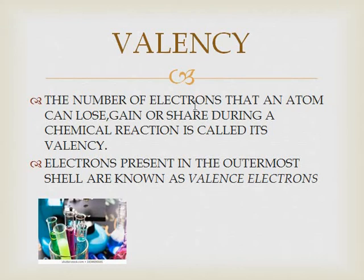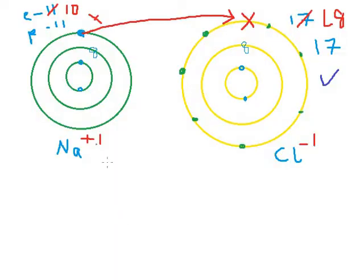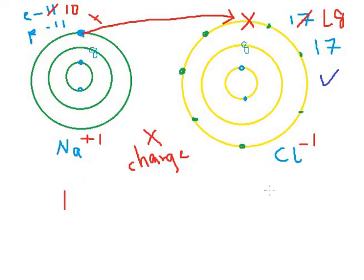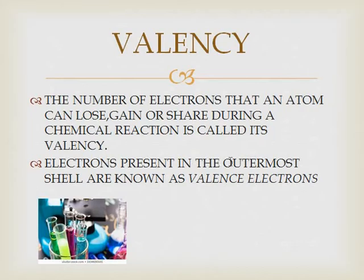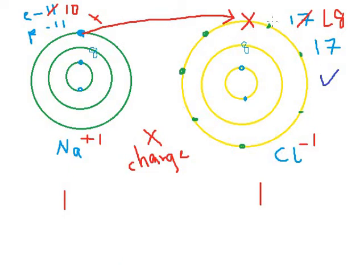Now let's look at valency. The number of electrons that an atom can lose, gain, or share during a chemical reaction is called its valency. Remember: valency does not have a charge. Many students make the mistake of writing valency as plus one or minus one — that is wrong. The valency of sodium is one, because it has one electron in its outermost orbit. The valency of chlorine is also one, because it requires one electron. Electrons present in the outermost orbit are also known as valence electrons.